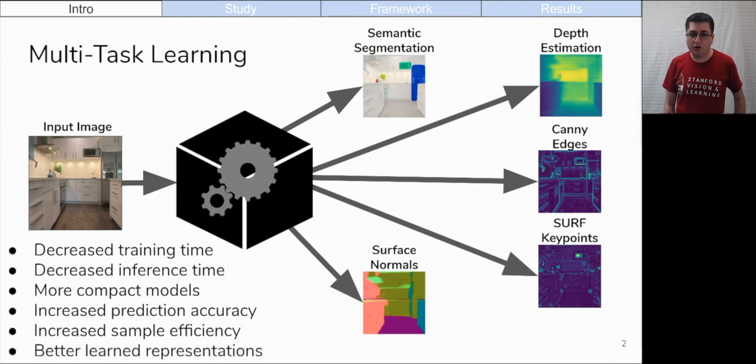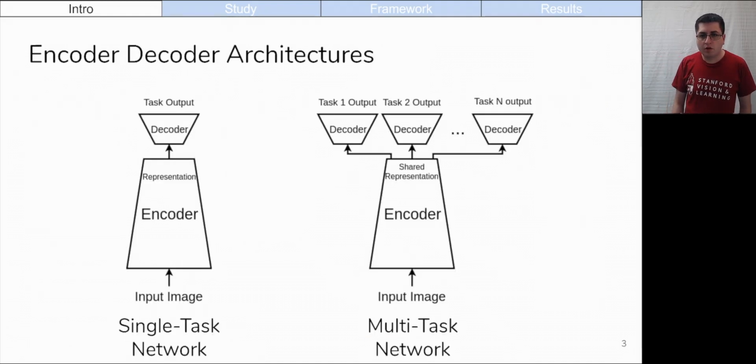Often, an improvement in one objective can be traded for an improvement in others. Our setup uses an encoder-decoder architecture. Single task networks have a single decoder for the one task that they solve. Multitask networks have a single encoder and multiple decoders, one for each task that they solve.